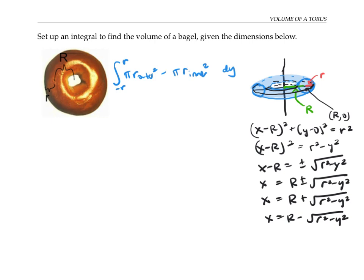I know that R plus is going to be a bigger number, so that's got to be the outer radius, and R minus is going to be a smaller number, the inner radius. Let me write this down.